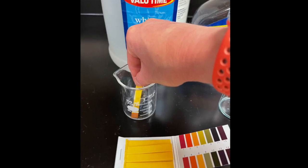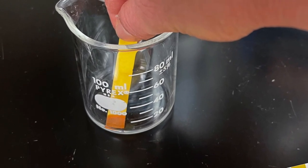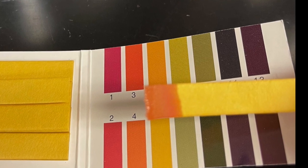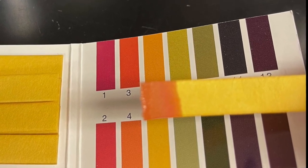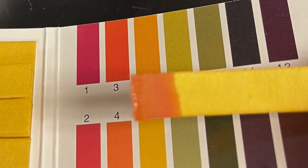So in this first sample I'm dipping the paper into vinegar. So when I dip it into vinegar you can see the color change and when you compare it to the color chart you can see it is indeed an acid. So vinegar has acetic acid in it it is an acid.